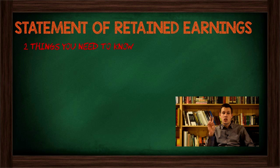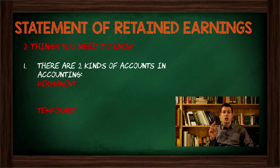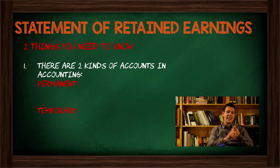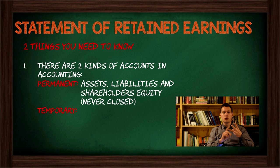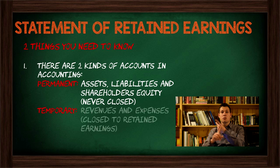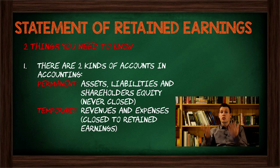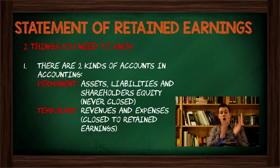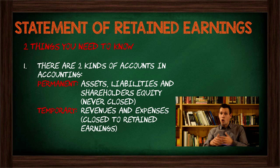There are two things you need to understand. First, there are two kinds of accounts in accounting: permanent accounts and temporary accounts. Permanent accounts are things like assets, liabilities, and shareholders' equity — they're there for the whole year and are never closed off. Whereas temporary accounts — things like revenues and expenses — are closed off. You may remember the term closing entries: temporary accounts only exist for one year, and at the end we close them off to retained earnings.